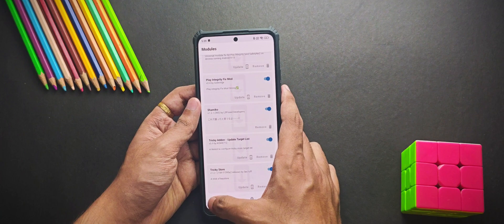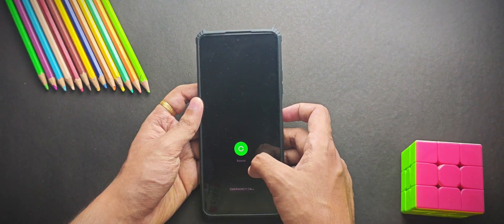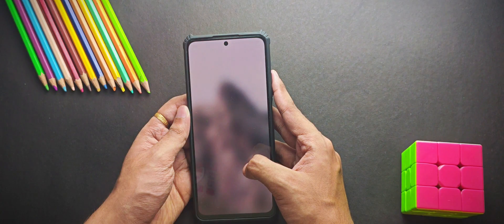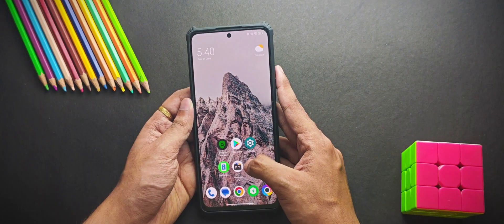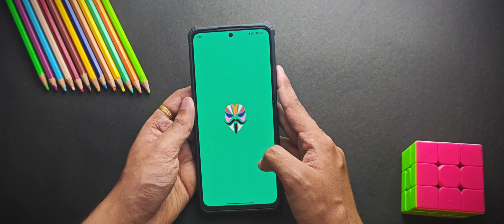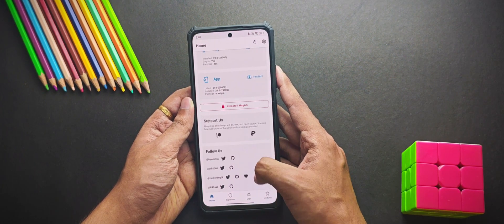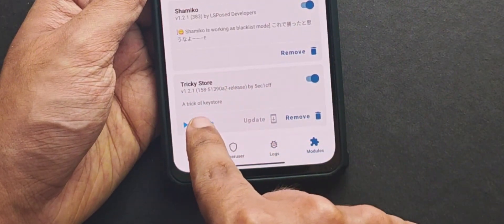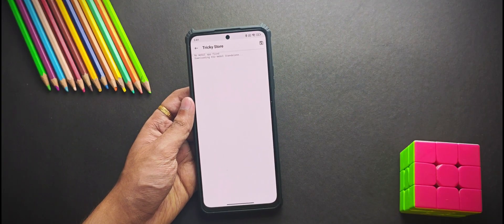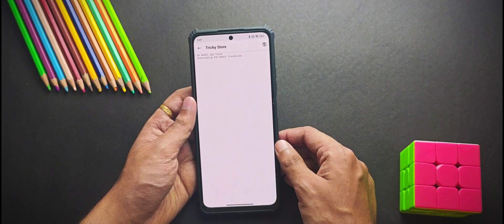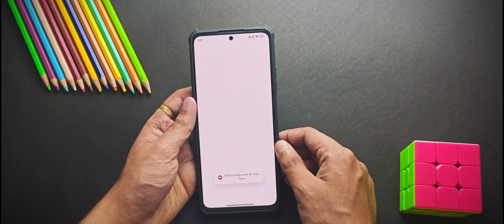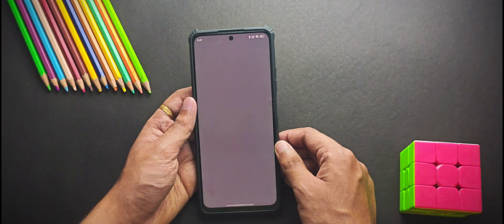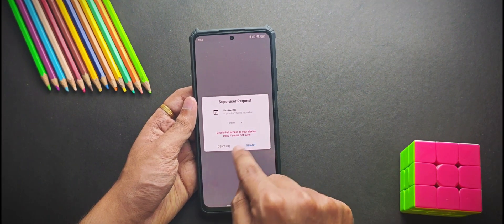Now once we have flashed everything just reboot the phone. After the phone has booted you will need to open Magisk or Kernel SU if you are using it and then head over to the module section then open the Tricky Store using this option. Now it will start installing the Kernel SU web UI and once the installation has completed it will open the Tricky Add-on so just grant the root access.